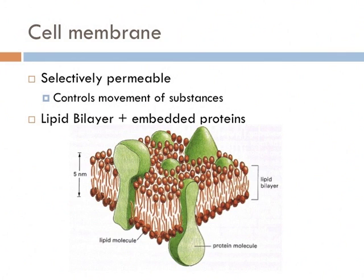Cell membranes are selectively permeable. They let some things in with no problems, they let other things in with permission, and other things can never get in. This is kind of like a prison gate in that respect. Air can come and go, prison guards and visitors can come and go under specific conditions, but those prisoners are stuck. Therefore, a prison is selectively permeable.